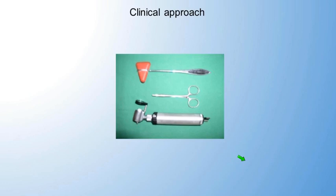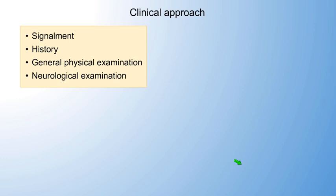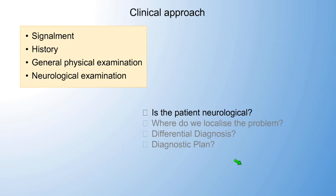From the clinical approach, it's important to start with signalment and history of the animal. A general physical examination is really important when assessing for CNS inflammatory disease, because especially infectious disease might cause systemic signs as well. Then obviously the neurological examination - the first question I want to answer: is my patient neurological, yes or no? And if I'm convinced it's neurological, I want to localize the problem.